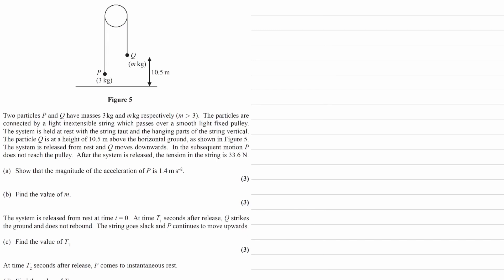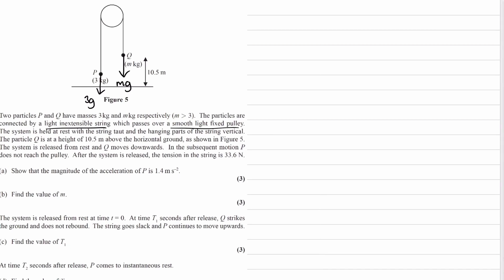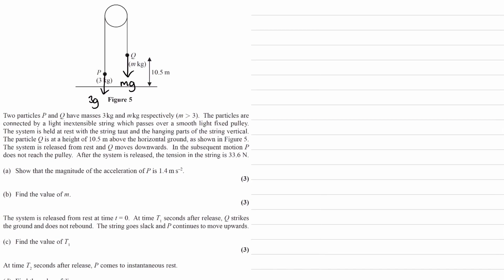We have two particles, P and Q. P has a mass of 3 kilograms, so I'll draw its weight force — that's 3G. And then Q has a mass of M kilograms, Mg. We're told that M is bigger than 3. We're given our modelling assumptions: the particles are connected by a light inextensible string over a smooth light fixed pulley. It's held at rest to begin with, string is taut, string is vertical. We're told the distance of Q above the ground. The system is then released from rest, and Q moves downwards, which is expected as it is the heavier mass.